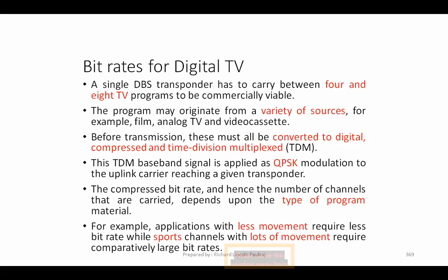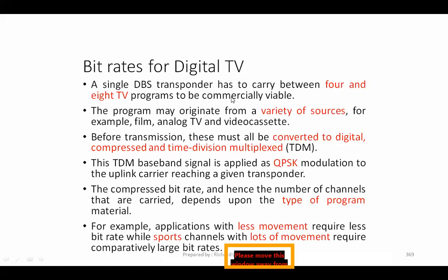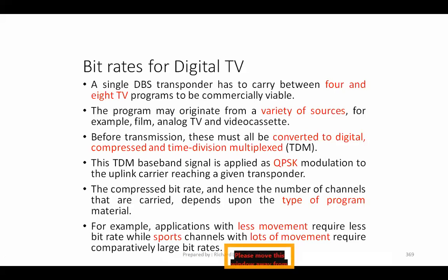The program may originate from a variety of sources — for example, film, analog TV, or video cassette. From the source side, they can connect to an analog TV or video cassette and broadcast it. Most contents you see will be pre-recorded, processed, and then published at a specific point in time. There are also a few programs that go live, so there are two types of content, and based on these we can allocate different channels or time slots.